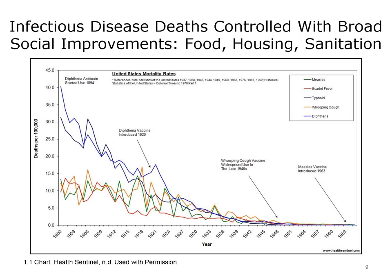Consider typhoid fever — it appears as a very dark blue line in the chart. Today, we treat this disease with antibiotics and can prevent it with an oral vaccine. But antibiotics only became available in the mid-20th century. As you can see from the chart, typhoid fever mortality declined about tenfold before antibiotics were ever available. The improvements were mainly due to improvements in sanitation, water supply, and housing.